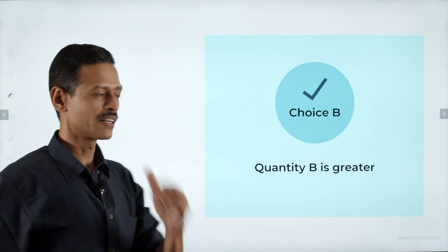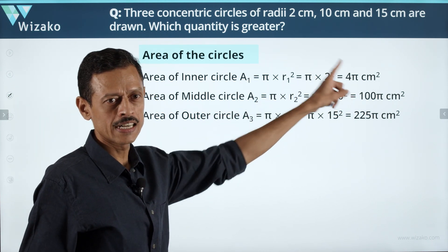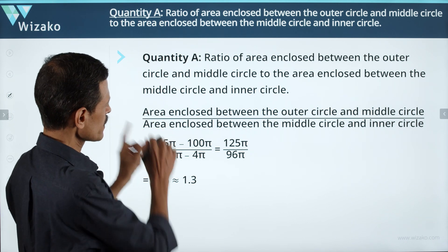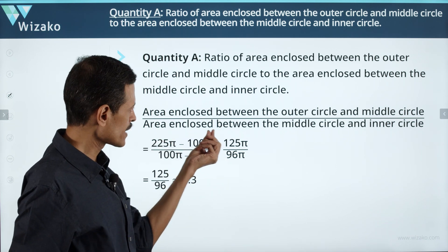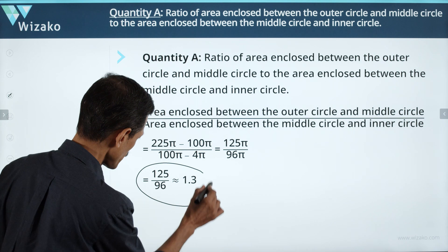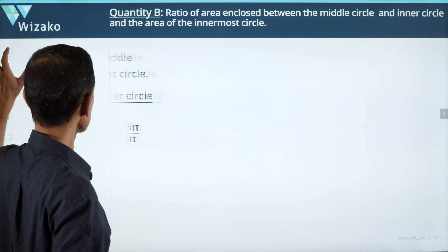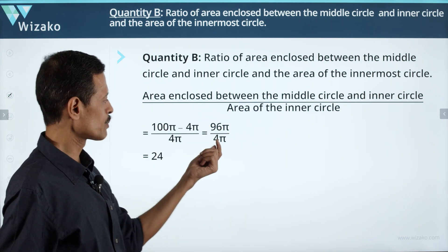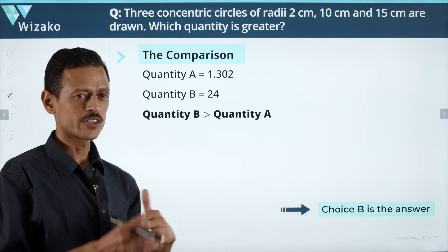Quick summary: Inner circle radius 2 → area 4π; middle circle radius 10 → area 100π; outer circle radius 15 → area 225π. Quantity A = (225π − 100π) ÷ (100π − 4π) = 125/96 ≈ 1.3. Quantity B = (100π − 4π) ÷ 4π = 96/4 = 24. Comparing 1.3 to 24, Quantity B is greater — answer is choice B.